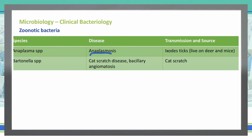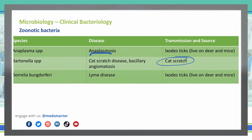Bartonella species causes cat scratch disease and bacillary angiomatosis, which you get — obviously based on the name — from a cat scratch. Borrelia burgdorferi is what we know as Lyme disease, and it also comes from the Ixodes tick. So both Anaplasma and Borrelia — Lyme disease — can come from the same Ixodes tick originating from deer and mice. This is important to differentiate between anaplasmosis and Lyme disease since they share the same source.